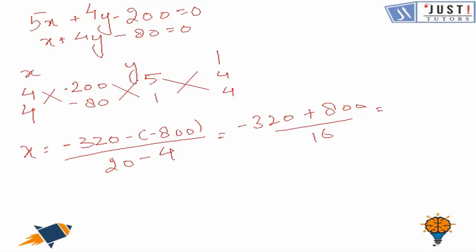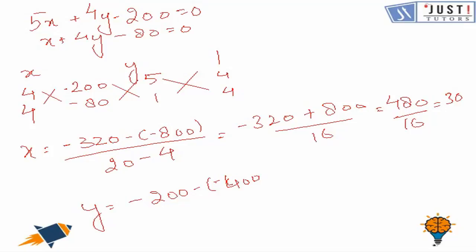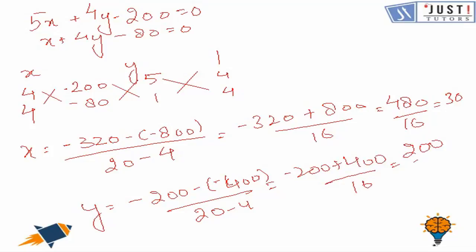That gives us 480 over 16, so x equals 30. Similarly for y: minus 200 times 1 minus 5 times minus 80, over 20 minus 4, which is minus 200 plus 400 over 16, giving 200 over 16, which equals 25 over 2. So x is 30 and y is 25 over 2. In this way we can solve questions using the cross multiplication method.